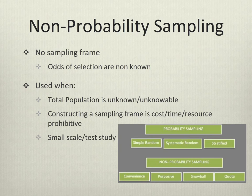You're going to want to use a non-probability method when the total population is unknown or unknowable. You'll also want to use it if constructing a sampling frame is too cost, time, or resource prohibitive. Finally, many people use a non-probability sampling method for a small-scale study or a test study.